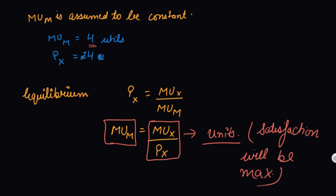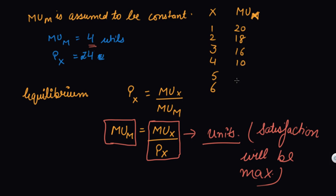Let's take a numerical example. These are the units of commodity X: 1, 2, 3, 4, 5, 6. The marginal utility of commodity X at each unit is: 20, 18, 16, 10, 0, and minus 5. Now let's calculate the marginal utility of money, which equals marginal utility of X divided by the price of X.